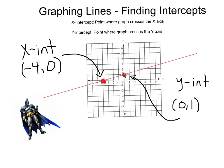So we've got our x-intercept crossing the x-axis at the point negative four zero, and our y-intercept crossing the y-axis at the point zero, one.